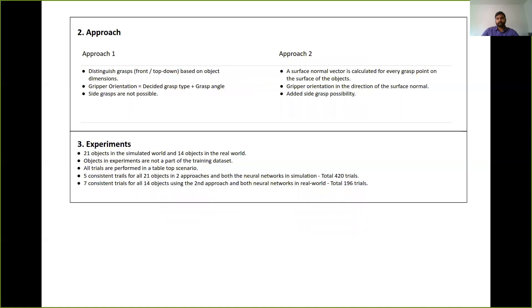Then we have the second approach. In the second approach, we've used the surface normal vector that we calculated at every grasp point on the surface of the objects. And the gripper orientation was then calculated to orient the gripper in the direction of the surface normal for grasping. This approach has added side grasp possibilities.